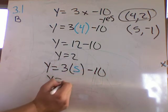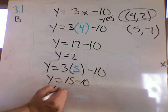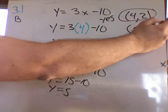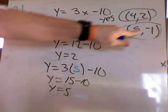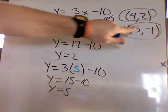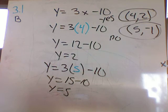So 15 minus 10, y equals a 5. So in this case, it's a no. Because when we plugged in a 5, we wanted to get a negative 1. So this data point is not included in that line.